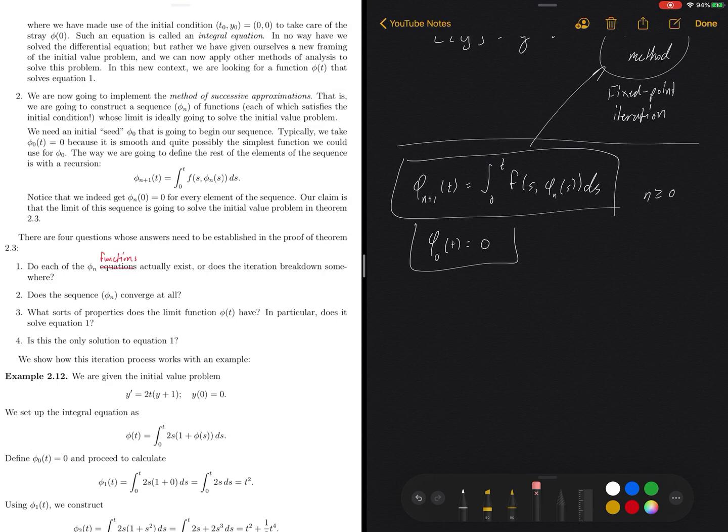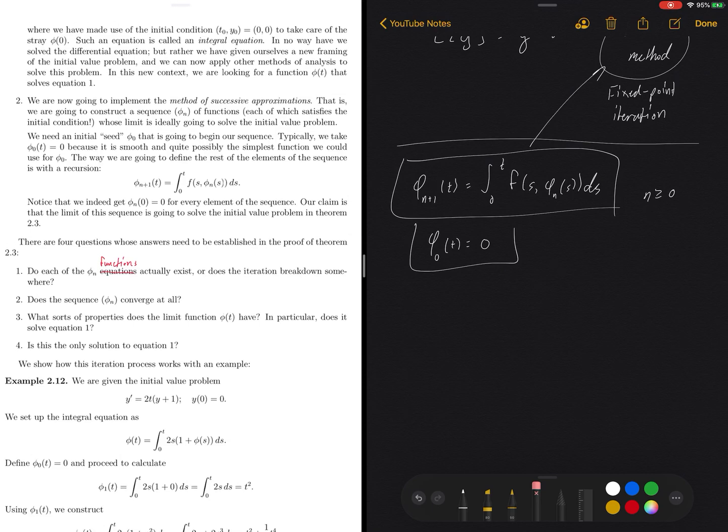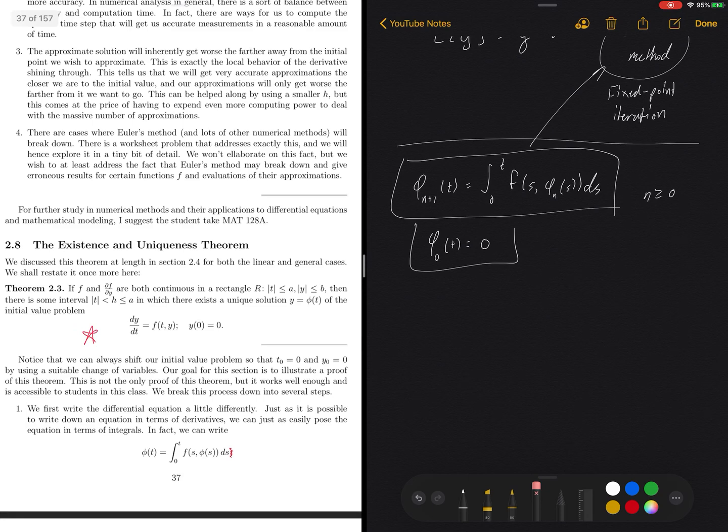Two: does this sequence of φₙ's actually converge? Does it converge to anything at all? We don't know. Number three: if it does converge, what sorts of properties does that limiting function φ have?